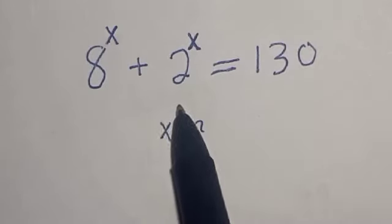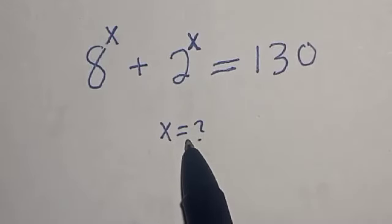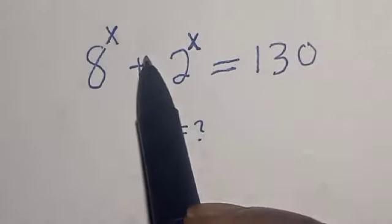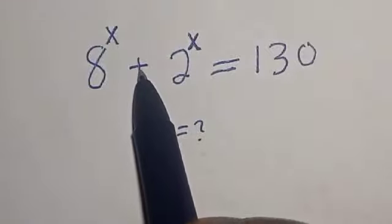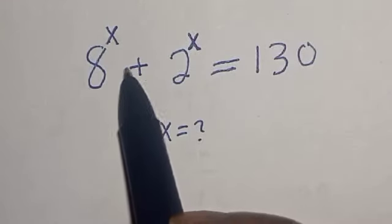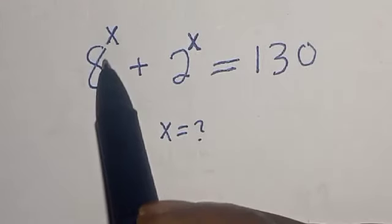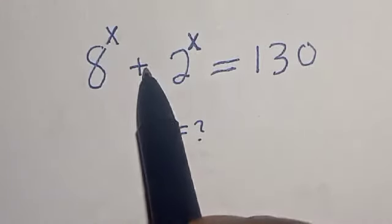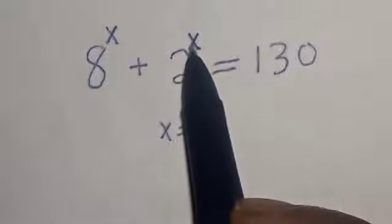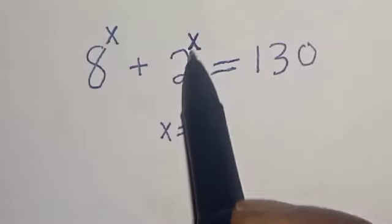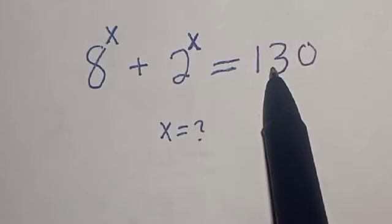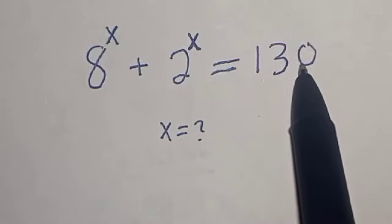Hello, welcome to MathGist. In this class we quickly want to find the value of s from this given nice olympiad exponential equation: 8 raised to the power s plus 2 raised to the power s is equal to 130.